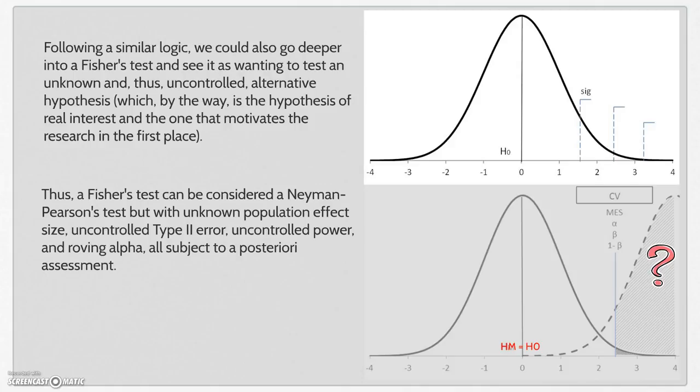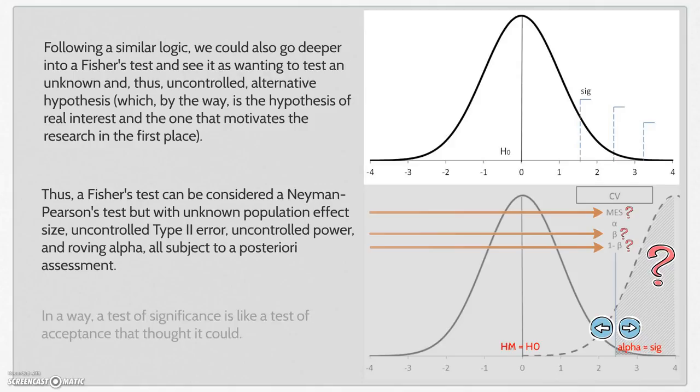Thus, a Fisher's test can be considered a Neiman-Pearson's test, but with an unknown population effect size, uncontrolled Type II error, uncontrolled power, and roving alpha, all subject to a posteriori assessment. In a way, a test of significance is like a test of acceptance that thought it could.